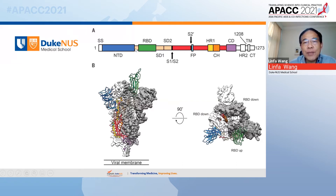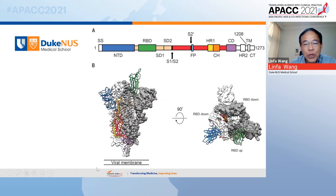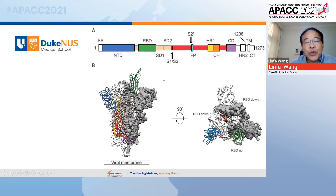S1 is functionally more important because that is the protein that interacts with the host cell, and it is also the target for vaccines and neutralization. In S1, you have the N-terminus domain and the receptor binding domain — the RBD is the most important. Here is the 3D diagram: this is the viral membrane, and on the tip of the spike protein is the RBD, which makes direct contact with the human receptor, which is the ACE2 molecule.